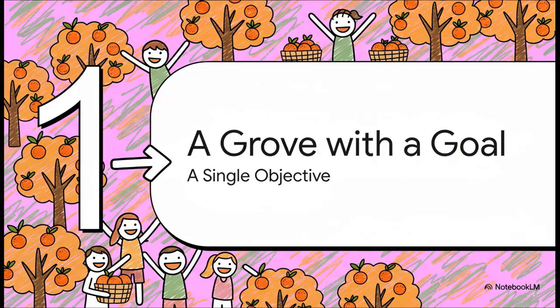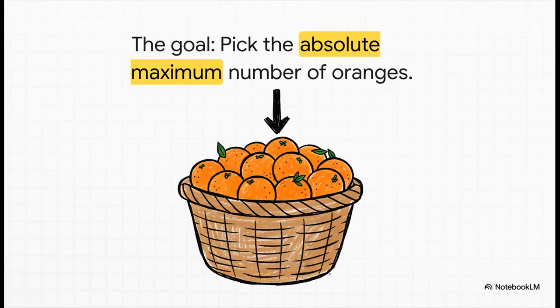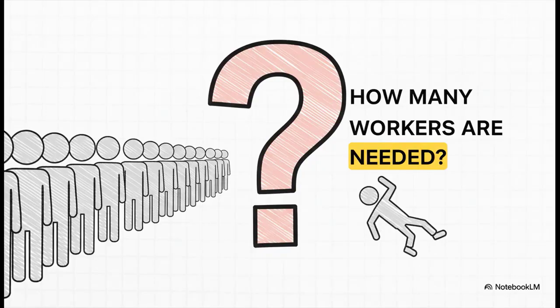Let's paint a picture here. Imagine an orange grove on a kibbutz. For this one task, the entire community has come together with one single very clear objective. The mission is simple. We're not worried about profits or any other complicated stuff. The only goal is to pick the absolute maximum number of oranges they can. That's it. So if your goal is just to pick the most oranges, and you've got tons of willing workers, what's the obvious answer? Use all of them, right? Well, as we're about to see, that simple intuition could lead to a surprisingly big mistake.